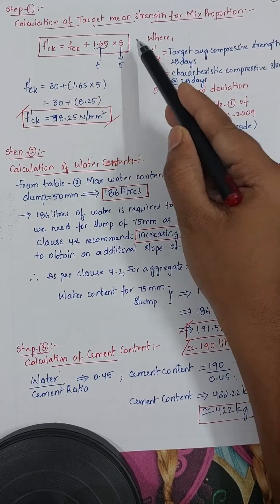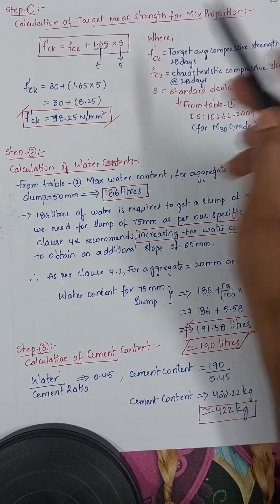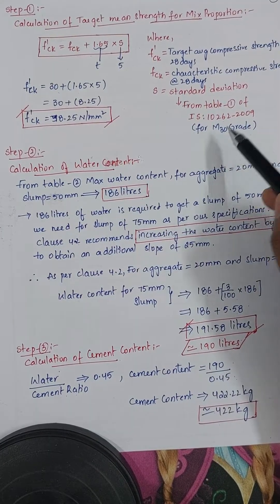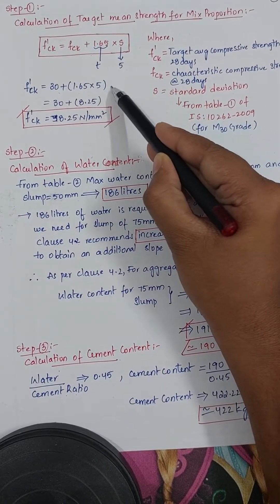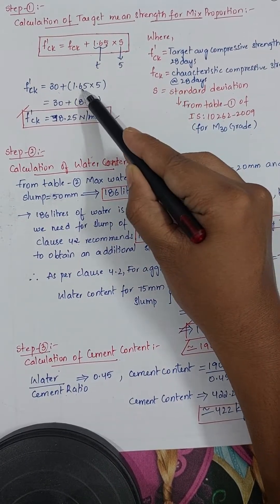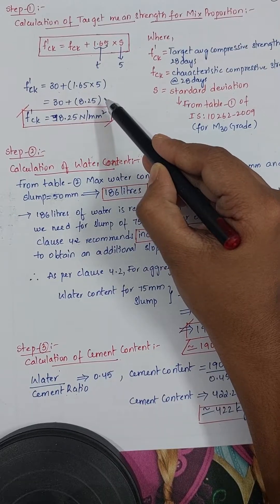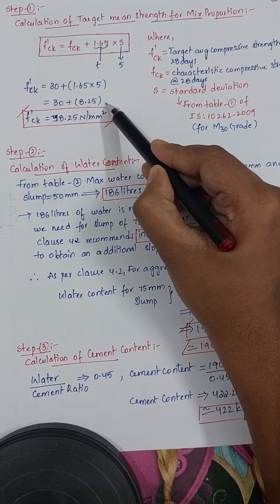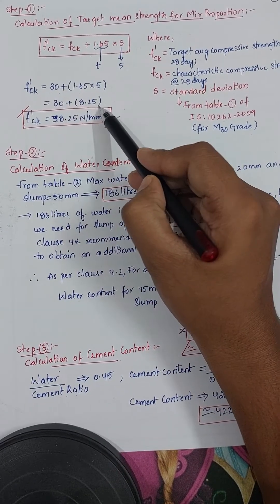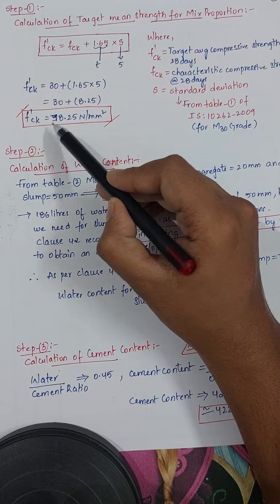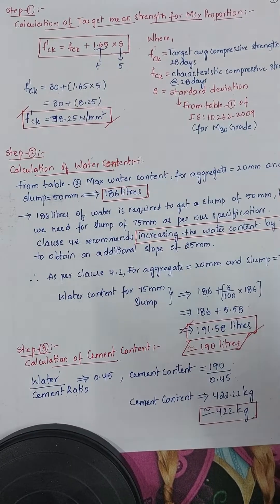So 1.65 × 5 = 8.25. Therefore F'ck = 30 + 8.25 = 38.25 N/mm².